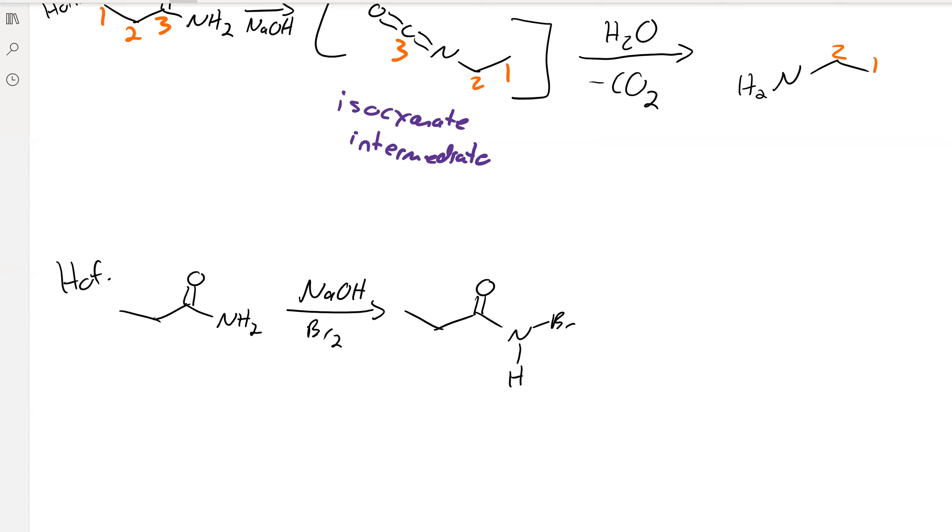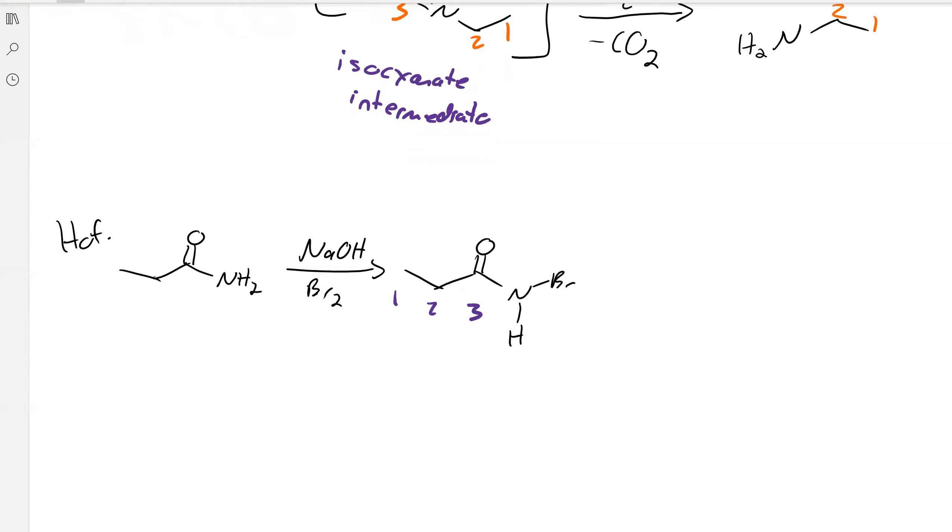So now we'll have a bromine on here. And then if we number these as number 1, number 2, number 3, here's the kind of key step, the rearrangement. The carbon 2-3 bond is going to break, attach itself to the nitrogen, and then the bromine is going to act as a leaving group and leave. So now our nitrogen is going to be attached to carbon number 2.